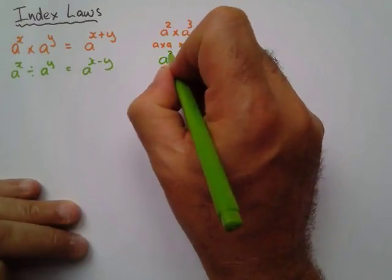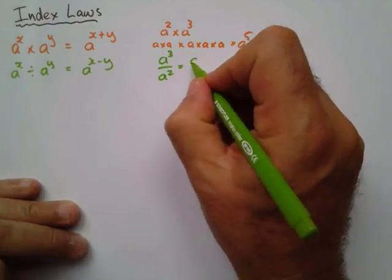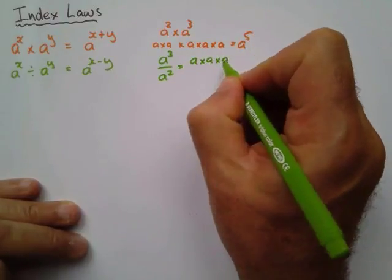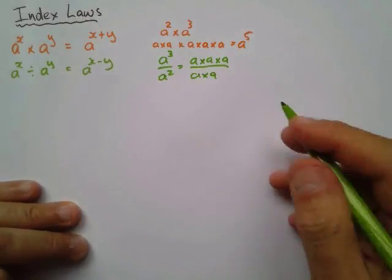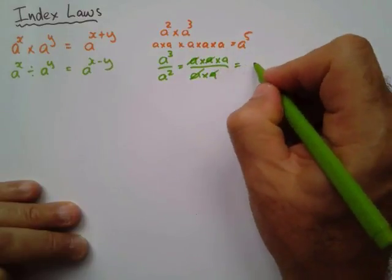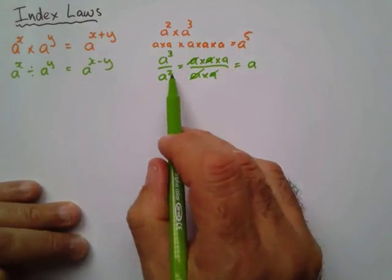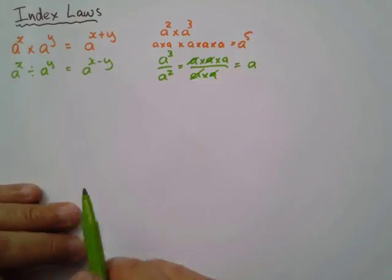If I have a to the power 3, divide by a to the power 2, it actually means a times a times a, divide by a times a. Because I'm dividing, two of these cancel, so I'm left with a. A to the power 3, take away 2, is a. And that's why we divide.